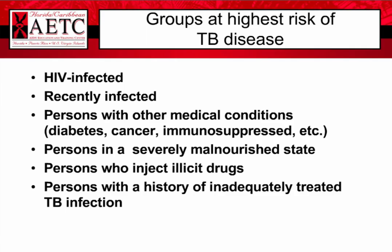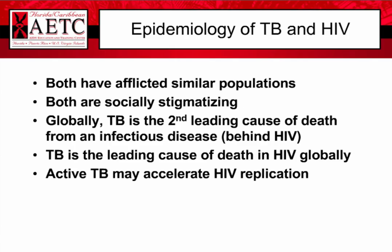Who is at highest risk of TB disease? Patients who are HIV infected, recently infected, or have other medical conditions such as diabetes, cancer, immunosuppression from rheumatoid arthritis, high-dose steroids for COPD, or end-stage renal disease are at high risk. Patients who are severely malnourished — 10% below ideal body weight — face an independent risk of progression from latent to active TB. Active injection drug users and patients with a history of inadequately treated TB also face elevated risk.